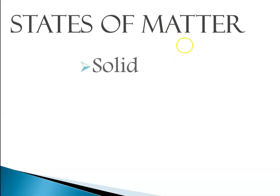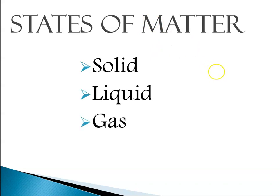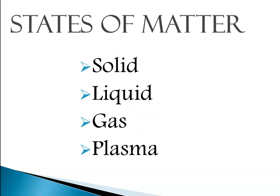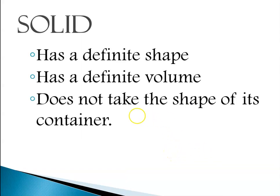The states of matter you've learned about previously are solid, liquid, gas, and you might have learned a little bit about plasma. Now at this point in the year we're just going to define them like you did in elementary school. Later on we'll have entire chapters devoted to states of matter and intermolecular forces. But for now, the old school definition of a solid: it has a definite shape, definite volume, does not take the shape of its container, and in general solids are not compressible.